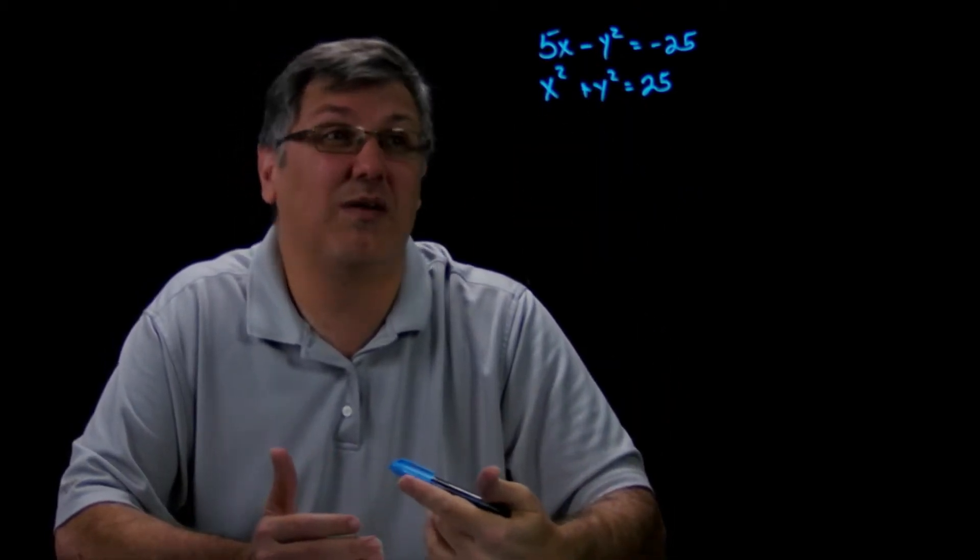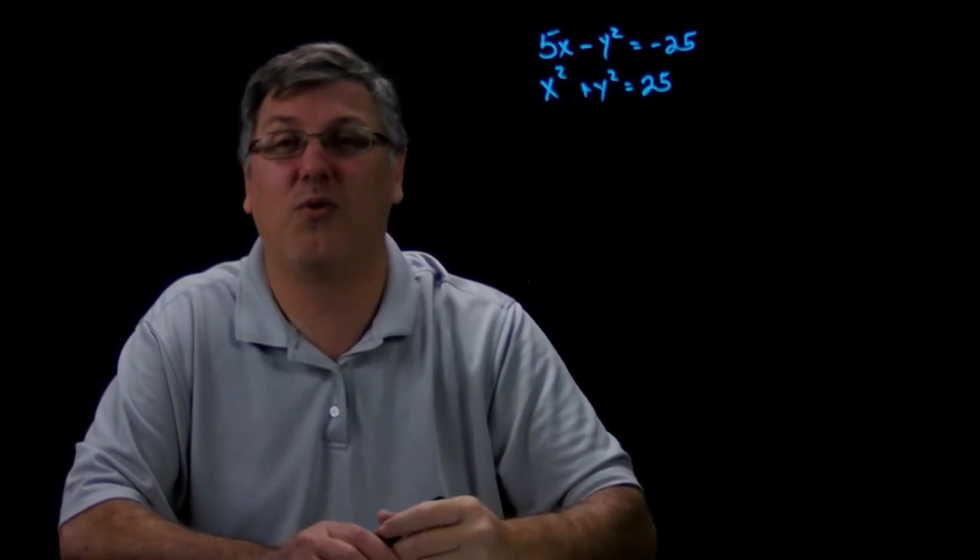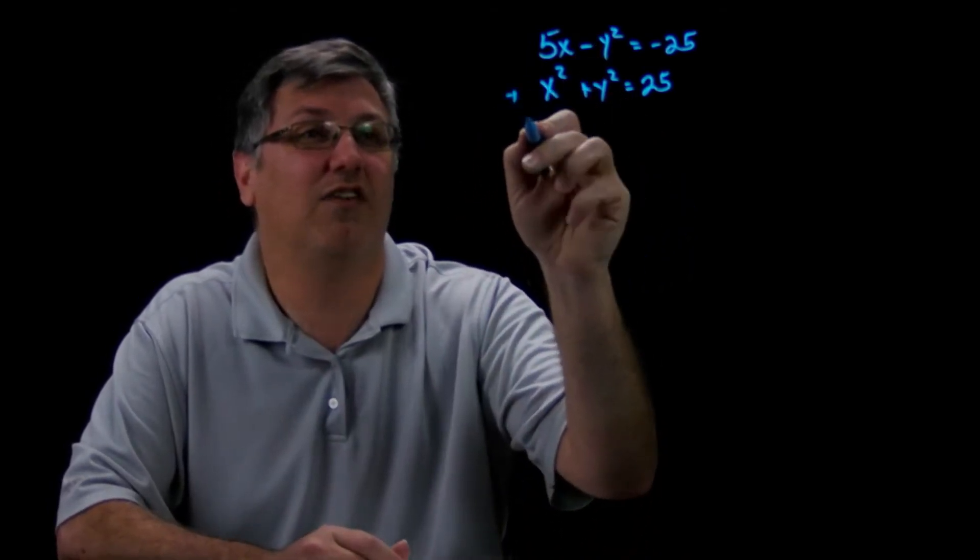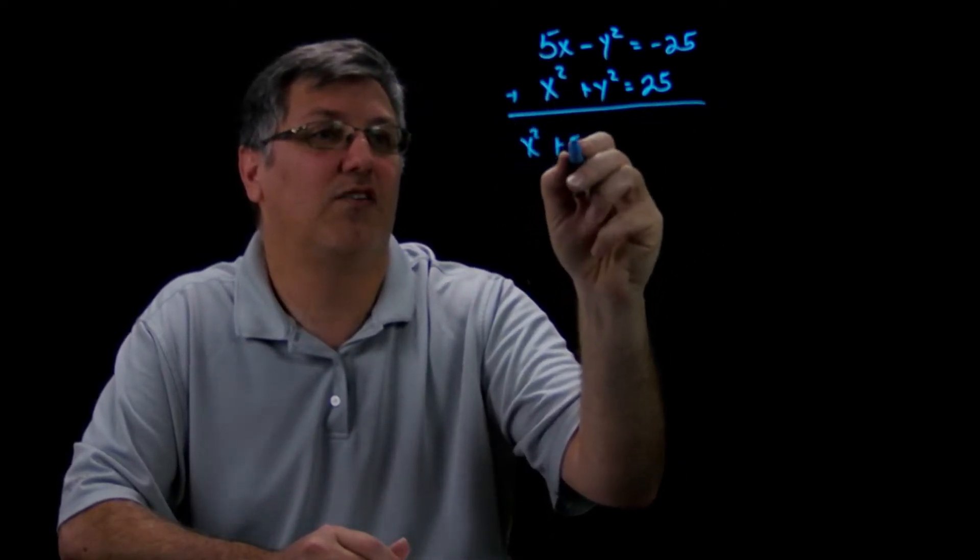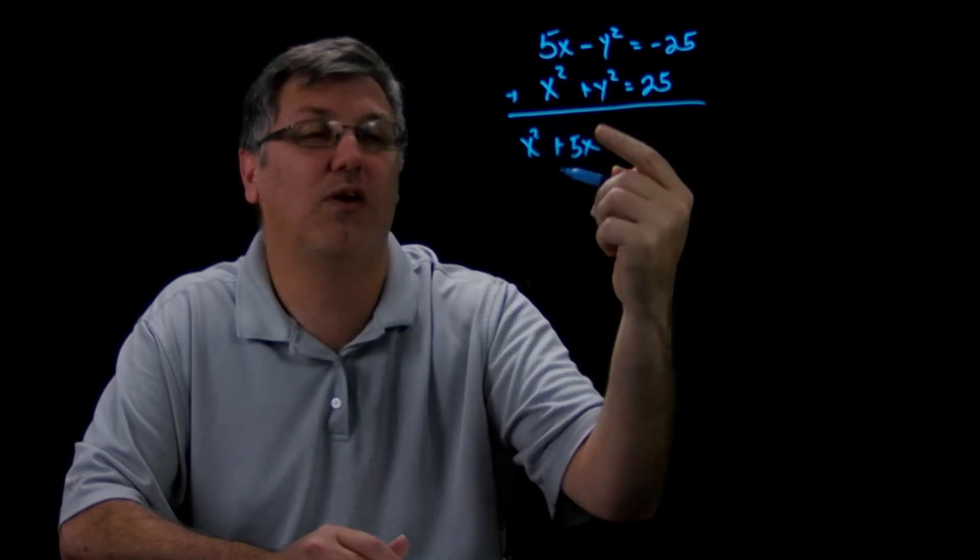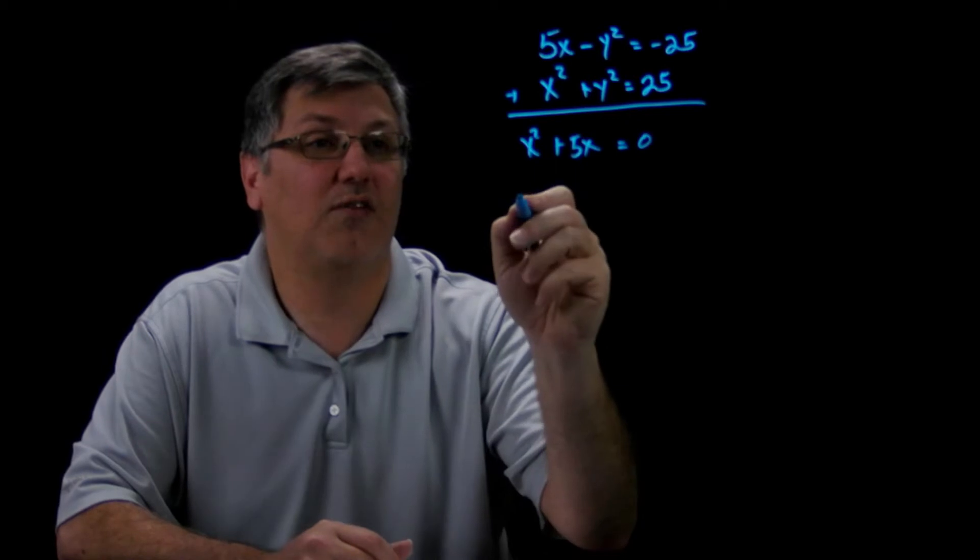But you can use just elimination. With a quick inspection, I see I have a negative y squared and a positive y squared. I can actually just add these equations together and I've got x squared plus 5x. Well, negative y squared and y squared is zero, this equals zero.